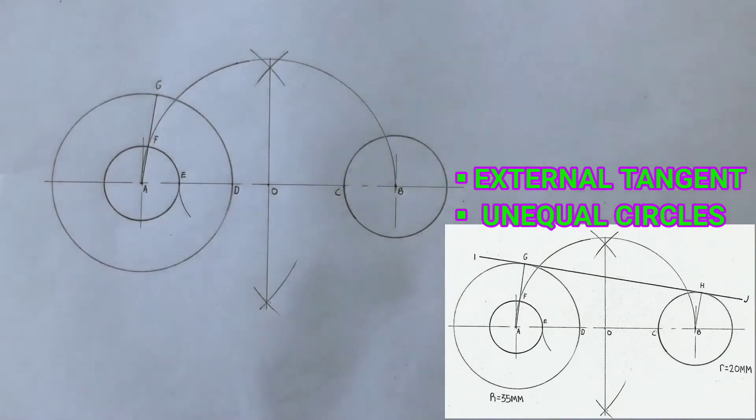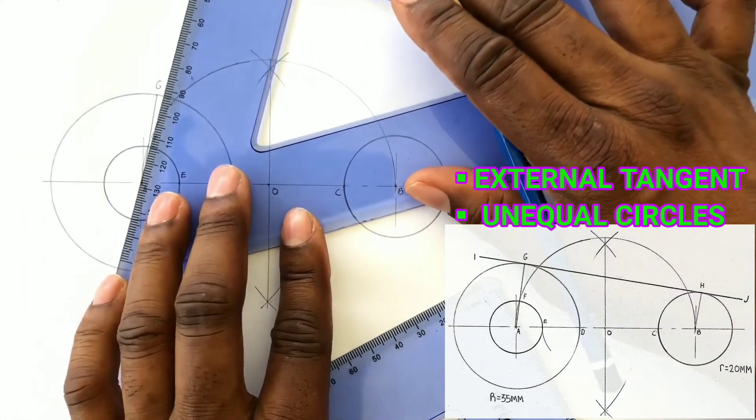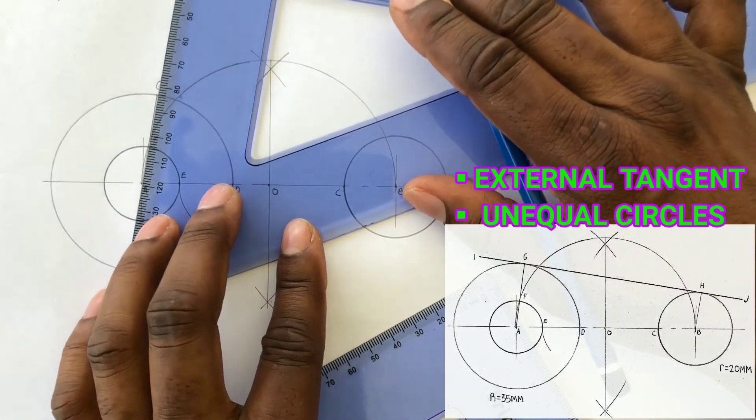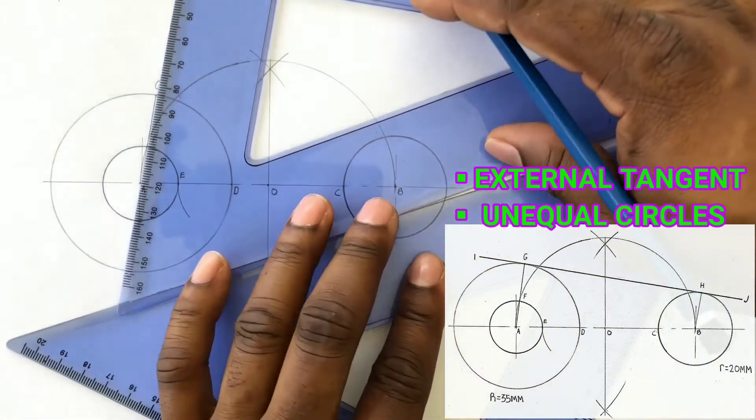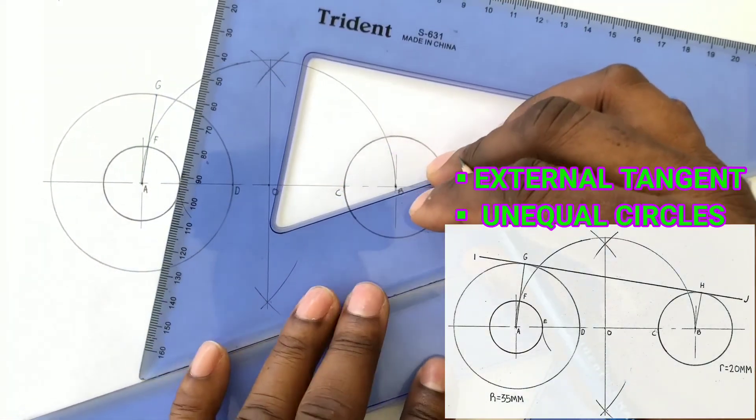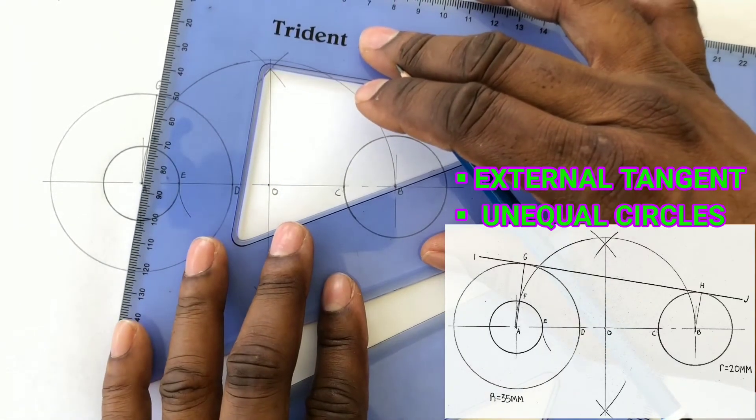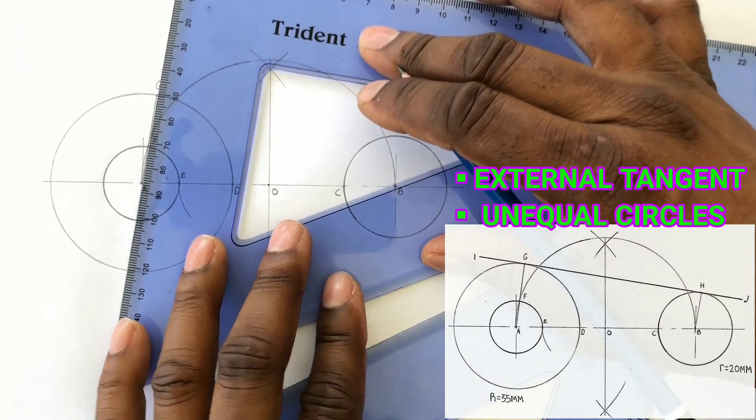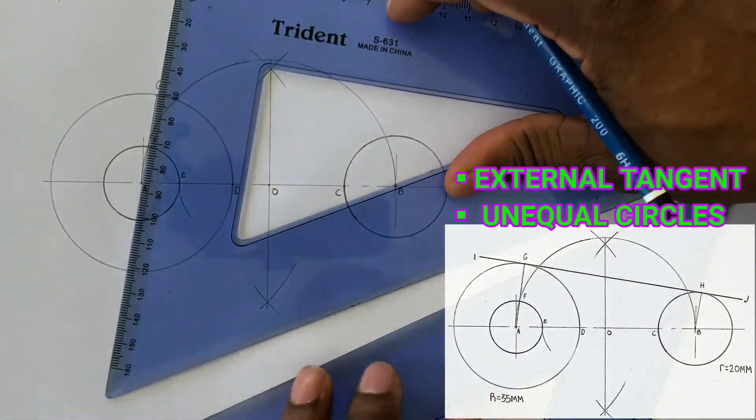We will now draw a parallel line at point B that is parallel to line AG. Place a set square along line AG then place another set square under the first set square. Ensure the first set square is properly sitting along line AG.